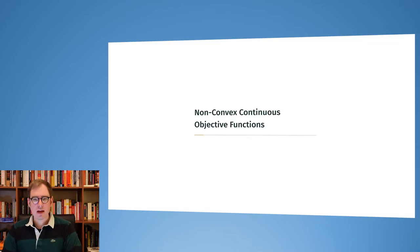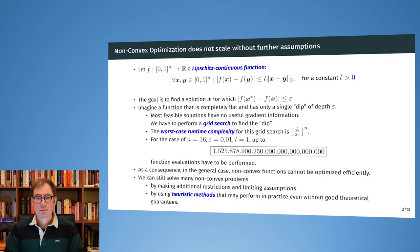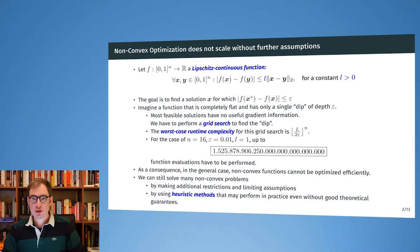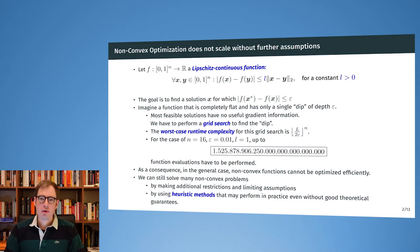Let's dive into non-convex continuous objective functions. So far, all the optimization problems we considered have been convex, and we had a lot of advantages from that — we could always walk downhill, and we were sure there is only a global optimum fulfilling conditions such as the gradient being zero at only that point.